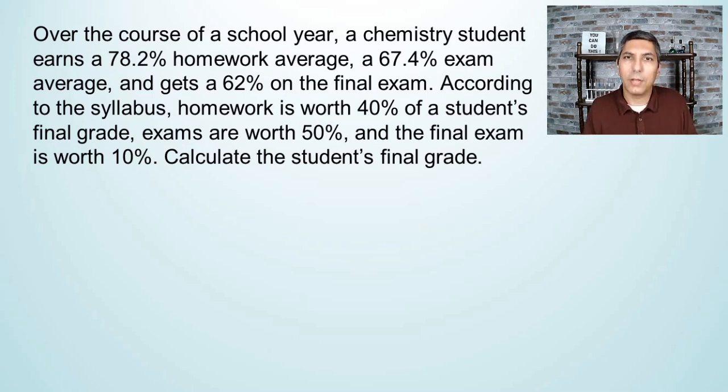Notice that the average is found differently. In this case, we're not just taking the three numbers and adding them together and dividing them by three. We have a specific weight on every one of those categories. The way that we solve this is we start with the first value. The student earned a 78.2 for their homework average, and homework is worth 40%. So we have to multiply the value by the decimal equivalent of its percentage, so 40% is 0.40. When you multiply those numbers by each other, you get 31.28.